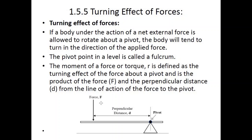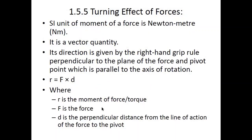To calculate the turning effect of a force, the moment, or the torque, apply the formula: force multiplied by distance — where distance is between the point at which force is applied and the pivot point. The unit of moment is newton meter, and it is also a vector quantity. Its direction is given by the right-hand grip rule, perpendicular to the plane of the force and pivot point, parallel to the axis of rotation.